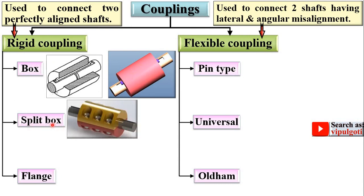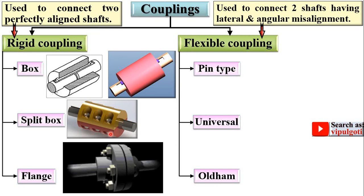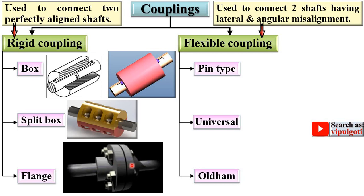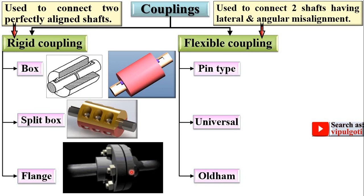In the case of split box coupling, the muff or box is split into two parts, which is why it is also called split muff coupling. In the case of flange coupling, flanges are mounted on each shaft, and these two flanges are used to transfer power from one shaft to the other — hence the name flange coupling.